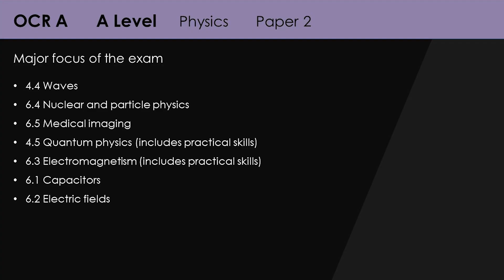For paper 2 in OCR A year 13, they've given you a broad range of topics. When it says waves, that is a large topic. So paper 2 has loads of questions about waves, nuclear and particle physics, medical physics, quantum, electromagnetism, capacitors, and electric fields — basically the whole of A-level physics as far as I can see. Make sure you're using this to focus your revision.